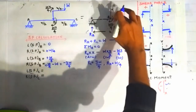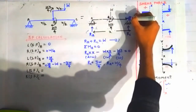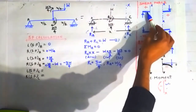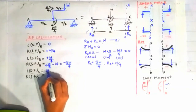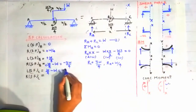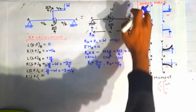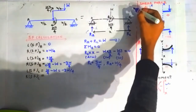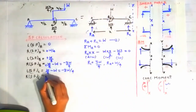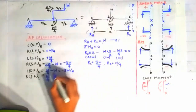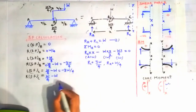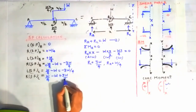On the left side of point C, constructing a section there, Ra contributes +W/4 and load W contributes −W, again giving −3W/4. On the right side of point C, Ra contributes +W/4, load W contributes −W, and Rc contributes +3W/4 using this sign convention, which sums to zero.